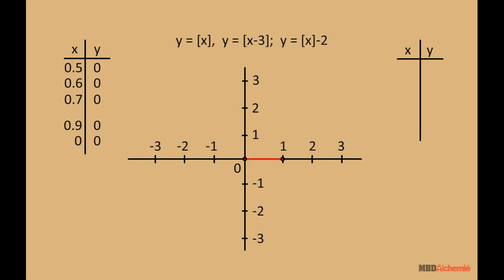Now, as we move to the right side of 1, we have for x equal to 1, we get y equal to 1. That means graph will jump here. Now, for x equal to 1.1, the first integer less than or equal to is 1, that is y equals 1.